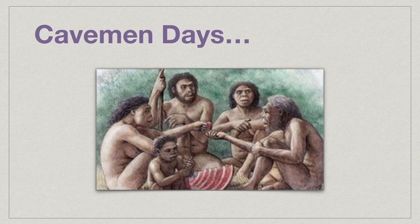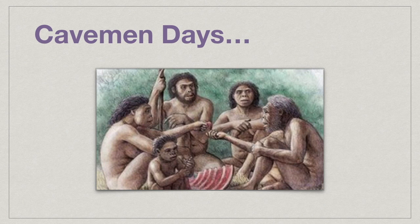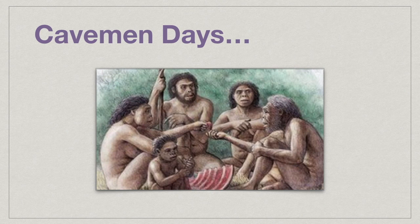A parent might teach a child that a saber-toothed tiger is bad — therefore all saber-toothed tigers are bad — so when the child sees one, the child will run away or do whatever is necessary to survive. As a species, we began to categorize things: tigers bad, fire hot, don't touch it. We also noticed anatomical differences between different types of people, and so we separated the group accordingly. We had men and women, and then we began to assign roles and characteristics to each.